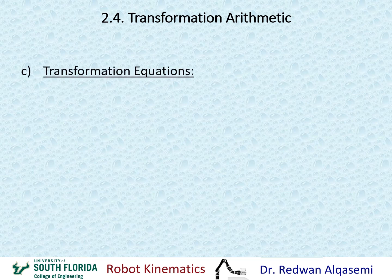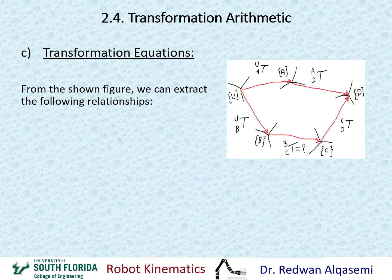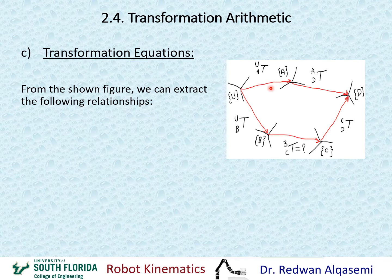Now let's talk about the transformation equations. If you look at this figure here, I have several frames defined. We have frame A, frame B, frame C, frame D, and frame U. Each one of these frames is defined relative to another frame. So I have frame A relative to U, D relative to A, D relative to C, C relative to B, and B relative to U.